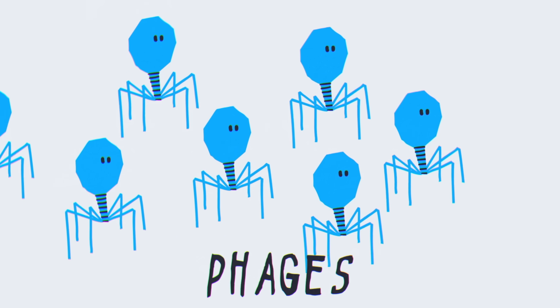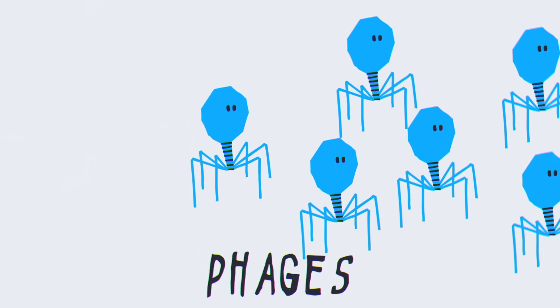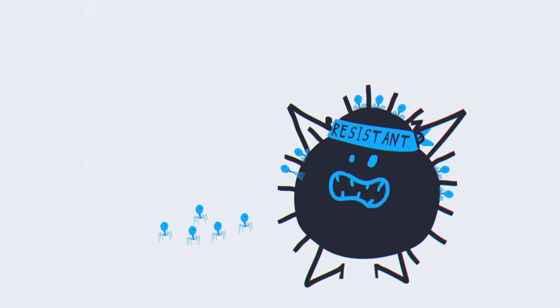Phages—viruses that attack bacteria but don't affect humans—are one promising new avenue to combat bacterial infections. Developing vaccines for common infections, meanwhile, can help prevent disease in the first place.